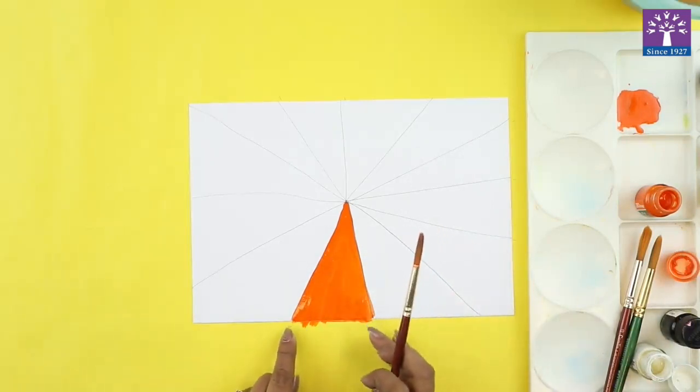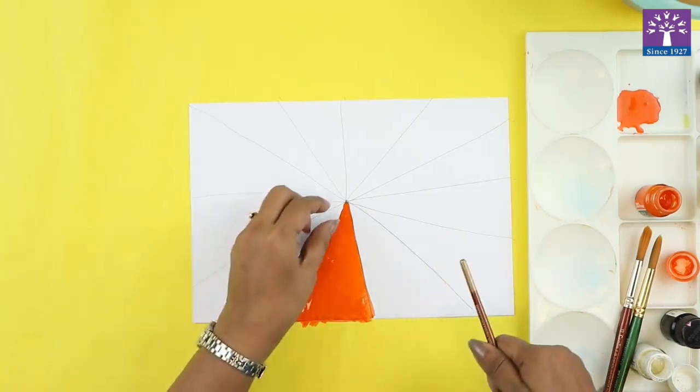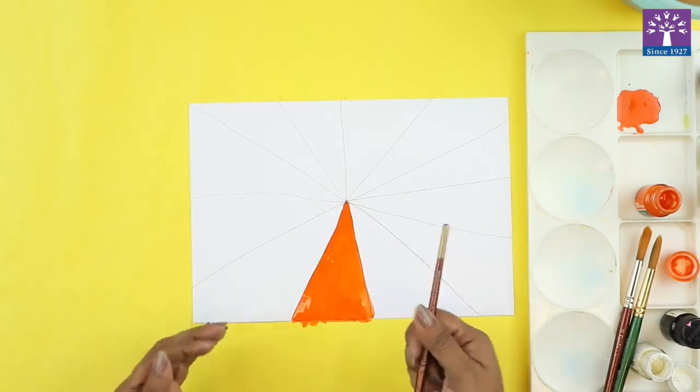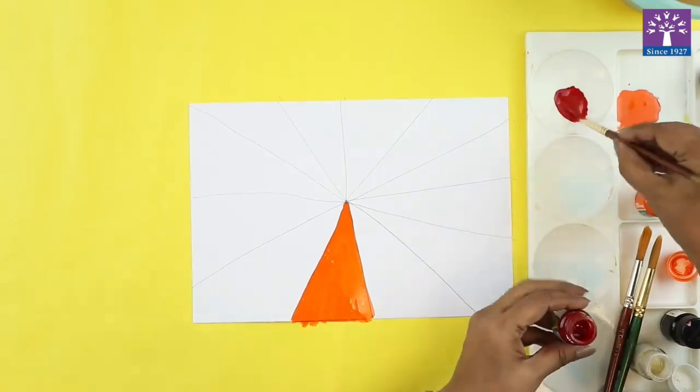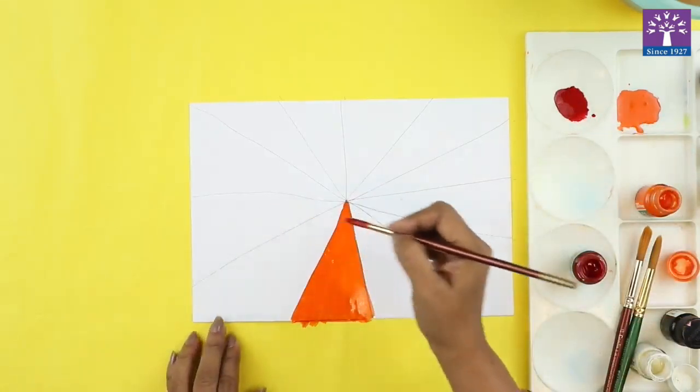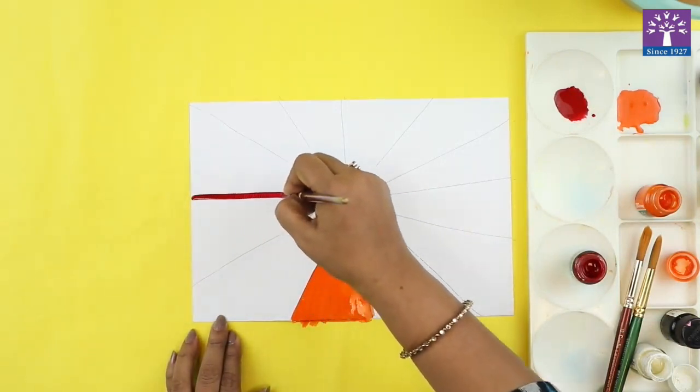And allow this part to dry and I will not immediately color in the adjoining parts, because when you start painting the adjoining parts immediately, the two colors at the edge can get mixed or they will bleed into each other. So first what I'll do is I'll alternatively paint some parts with different colors.